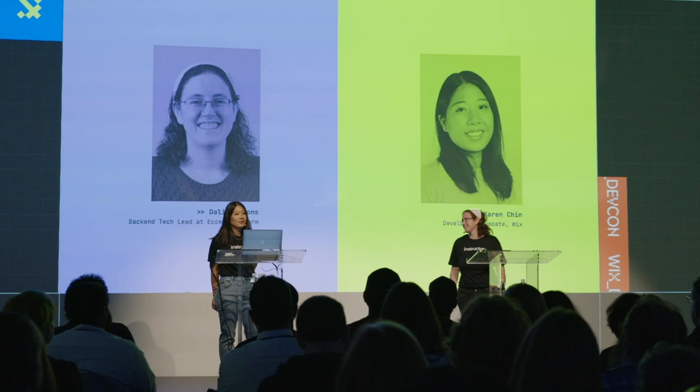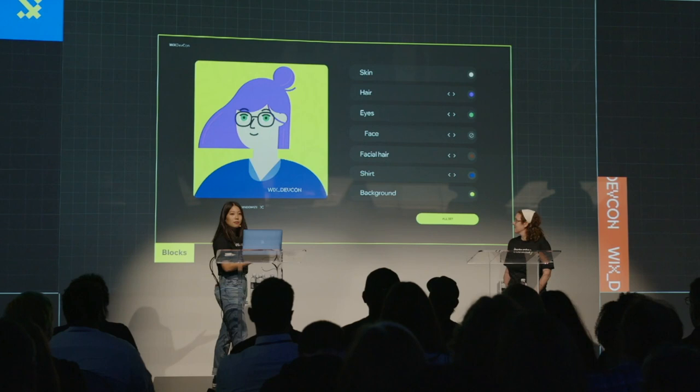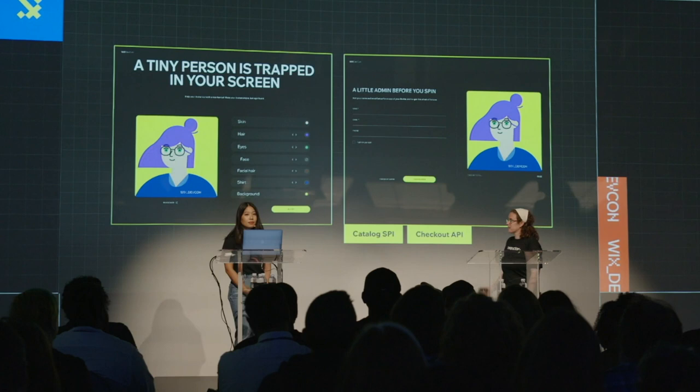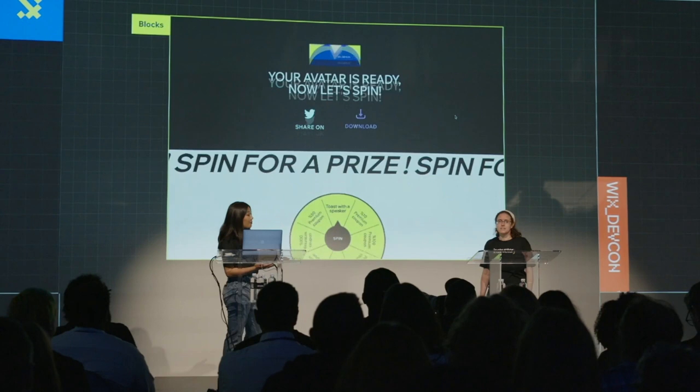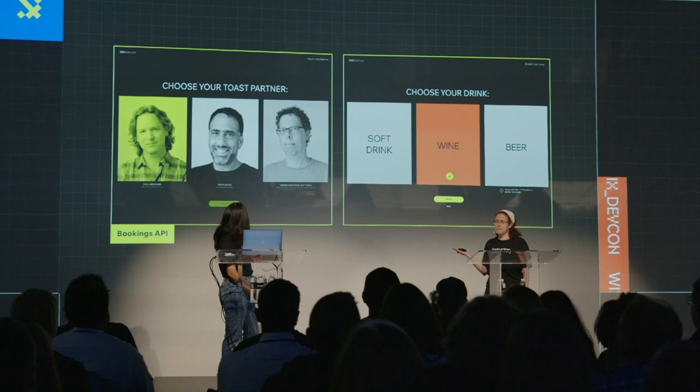So what does our site do? We used Blocks to create a custom avatar generator. Then we used the new Ecom Platform capabilities to create a custom catalog, and used the Checkout APIs to create a custom order. Then we added a spin wheel so everybody here can win a prize. One of those prizes is a toast with one of our keynote speakers, and we used the new Bookings API to implement it.